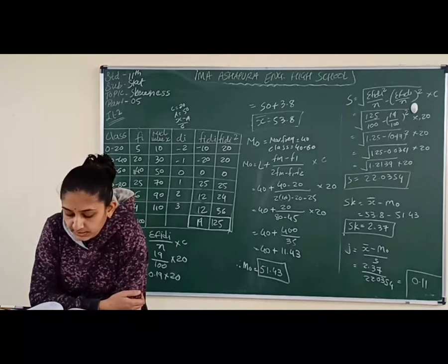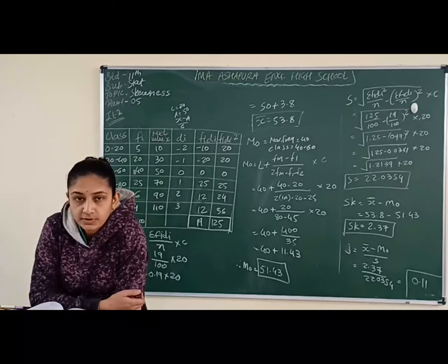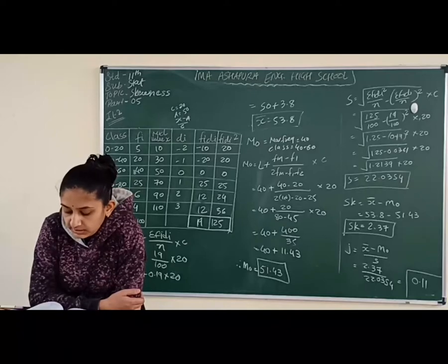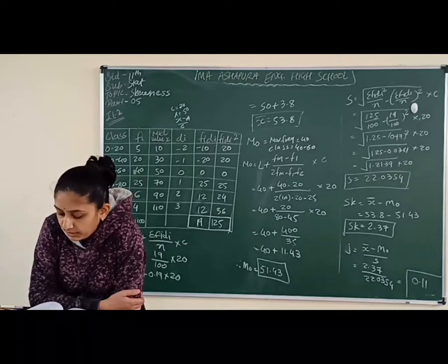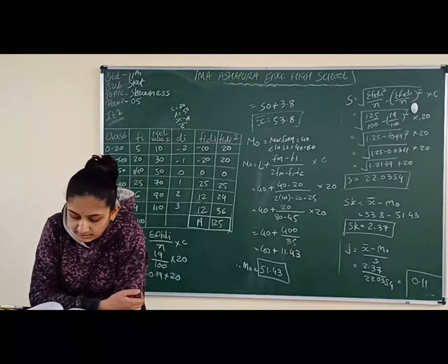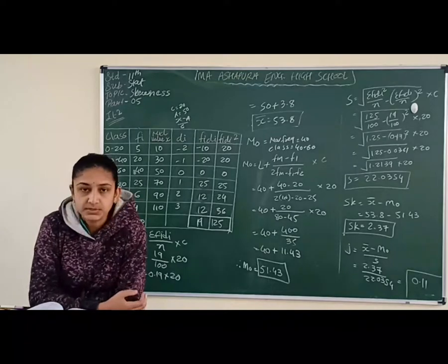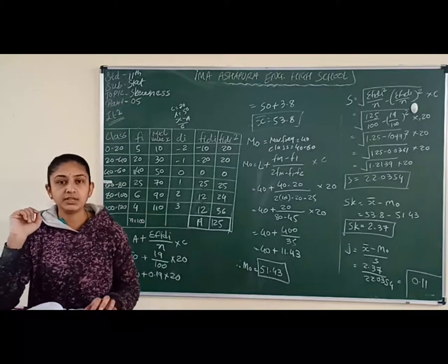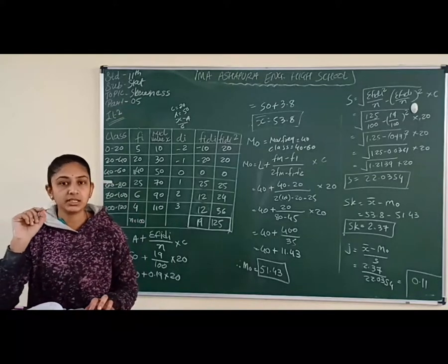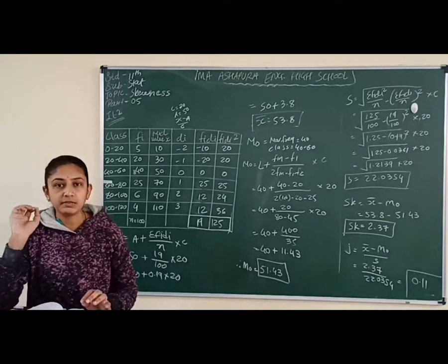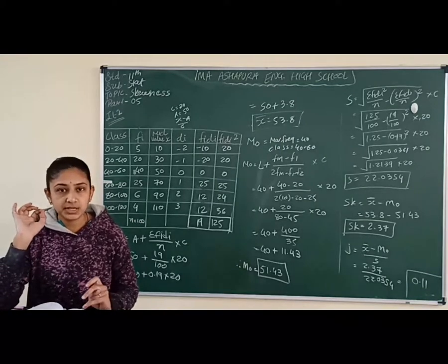Annual tax in lakh rupees and number of companies are given. As the given frequency distribution is unimodal, we will compute mean x̄, mode (m₀), and standard deviation (S). Previously in illustration 1 we solved a discrete frequency distribution, but here a continuous frequency distribution is given.